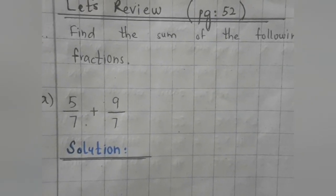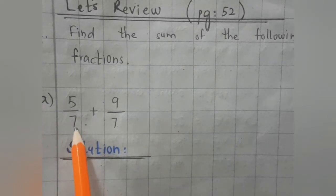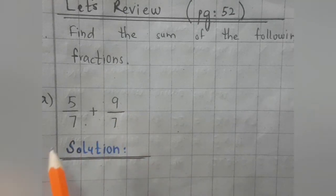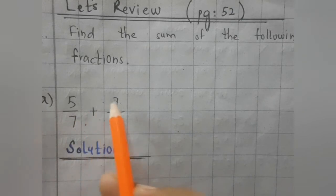Okay, after writing the question, Question number 1 from page 52, Part A, 5 upon 7 plus 9 upon 7. If we have the same denominators, we will simply add the numerators and the denominators will remain same.